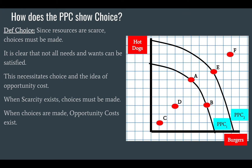Once you accept that, you must realise that choice is a necessity that follows on from scarcity. Since resources are scarce, choices must be made. In economics, the realisation of scarcity leads to choice, which then leads to opportunity cost. Since resources are scarce, we can't have everything that we want — we must choose. This idea of scarcity necessitates choice and the idea of opportunity cost.